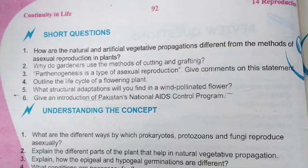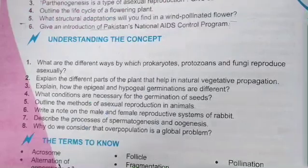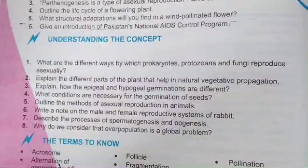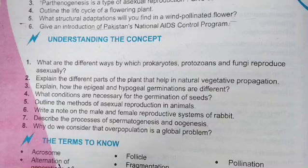The second statement under understanding concepts: explain the different parts of the plant that help in natural vegetative propagation. The plant parts involved in natural vegetative propagation are roots, stems, and leaves. The detailed answer is found on page number 75.